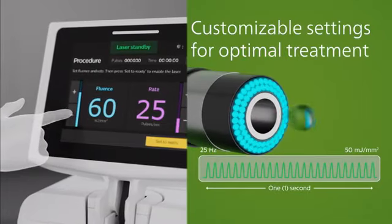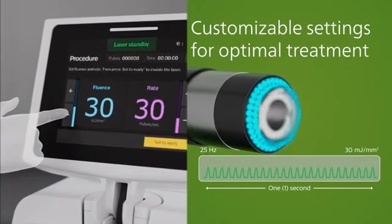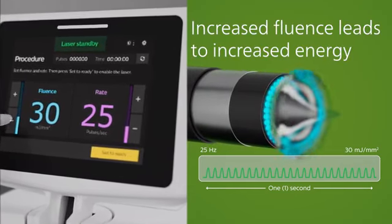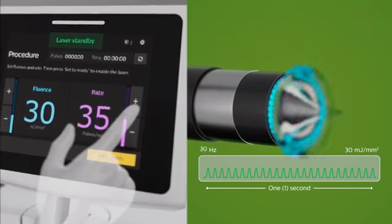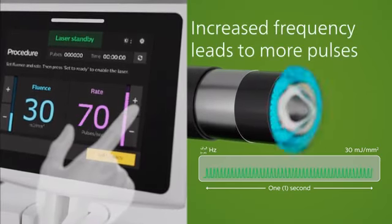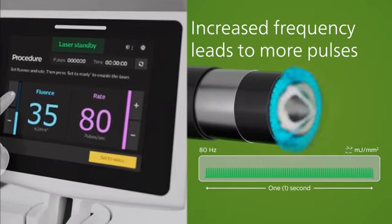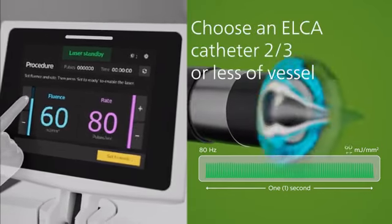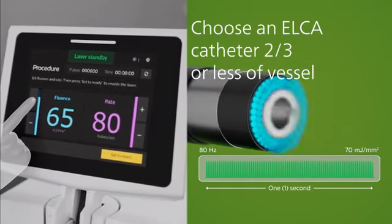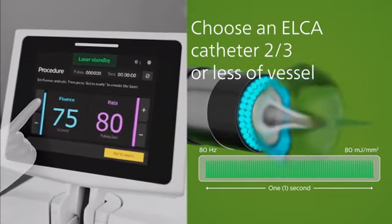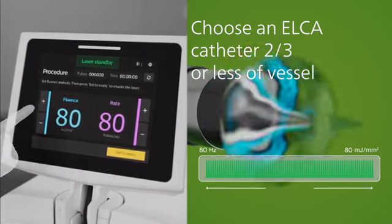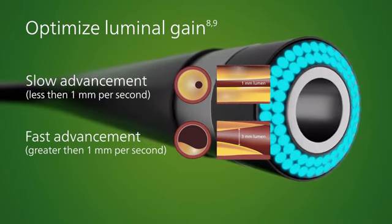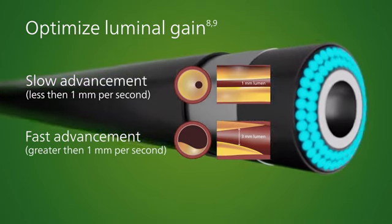ELCA has customizable energy and frequency modes to effectively debulk different morphologies. Fluency is the energy that is created during photoablation. Rate is the number of times per second the three mechanisms of action occur during photoablation. At max fluency settings, the cavitation bubble will be approximately 50% larger than the tip of the catheter, maximizing debulking. With slow and repeated advancements of ELCA, you can optimize your luminal gain.